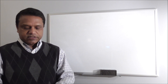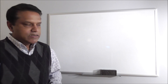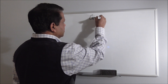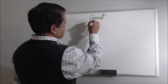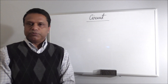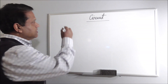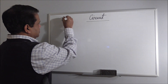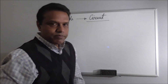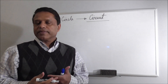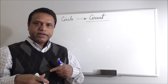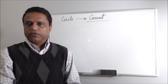Let's look at circuits first. The word circuit actually has some relation with the word circle. That means a circuit actually has a circular shape. There has to be a closed circular path for current to flow.